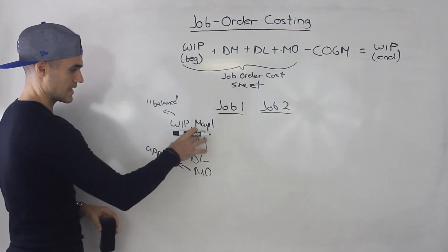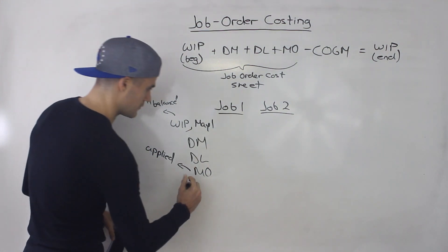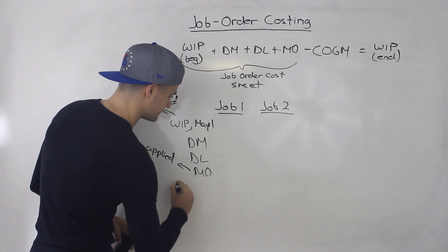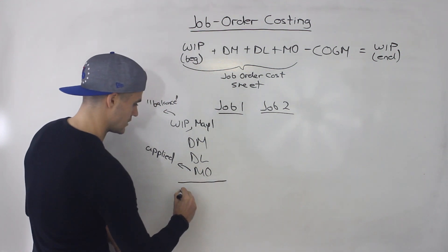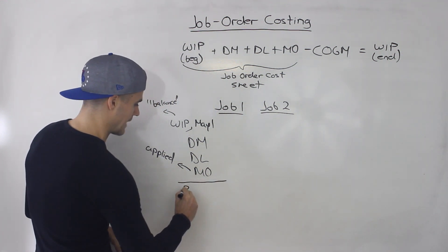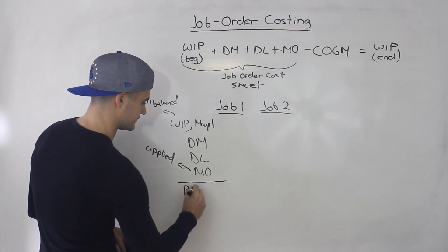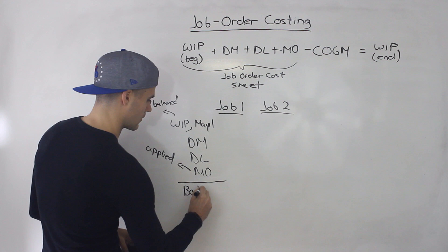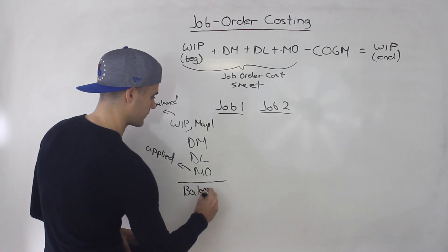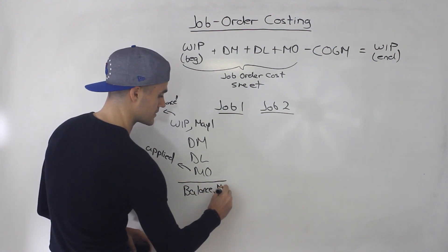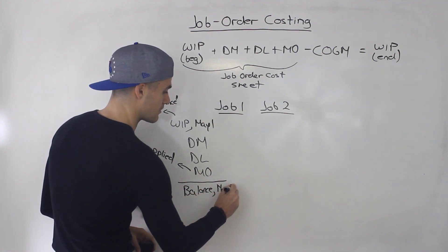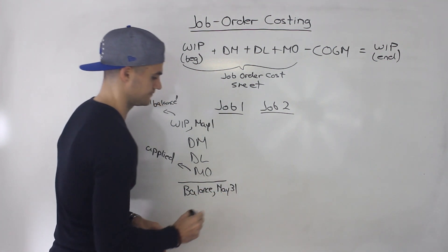What happens is you total up these amounts and you get some kind of balance at the end of the period — so let's say May 31st.